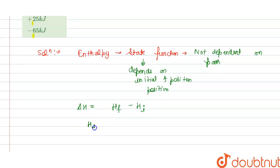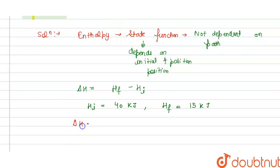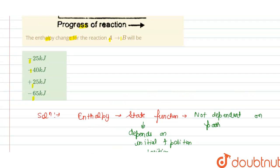Initially, we have 40 kilojoules, and finally the enthalpy is 15 kilojoules. If we put the values here, we get delta H equals 15 minus 40 kilojoules, which is minus 25 kilojoules. This is our answer. From this, we can say that option A is correct. Thank you.